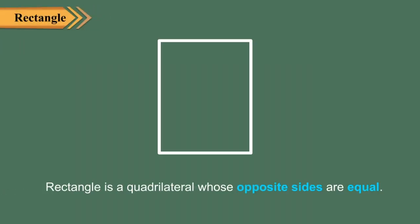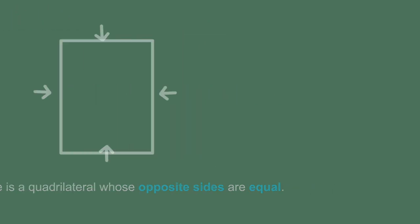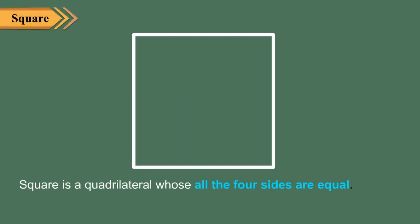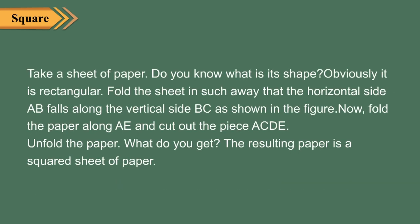Rectangle: a rectangle is a quadrilateral whose opposite sides are equal. Square: a square is a quadrilateral whose all four sides are equal. Take a sheet of paper — do you know what is its shape?